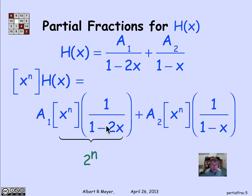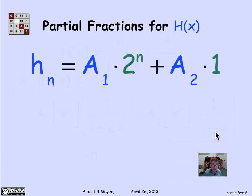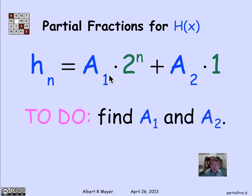I know that the nth coefficient of 1/(1 minus 2x) is 2^n, because we figured that out already. When I have a term of the form 1/(1 minus αx)^k, I know what its nth coefficient is. Likewise, the nth coefficient of 1/(1 minus x) is just 1, because it's that old familiar geometric series. So altogether, the nth coefficient of h(x) is a1 times 2^n plus a2 times 1, and all I have to do is figure out what a1 and a2 are.